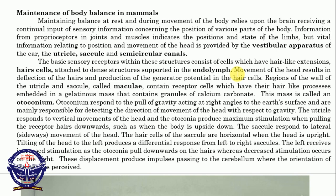Now, movement of the head results in the deflection of the hairs and production of generator potential in the hair cells. Regions of the wall of the utricle and saccule are called maculae. The maculae contain receptor cells whose hair-like processes are embedded in a gelatinous mass containing granules of calcium carbonate. This mass is called the otoconium.